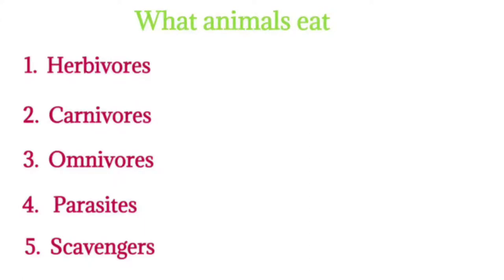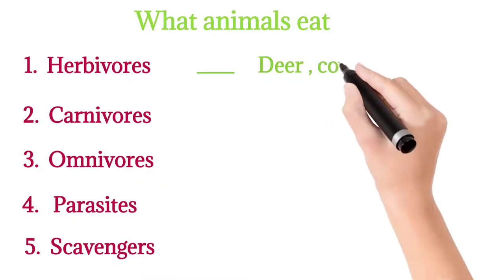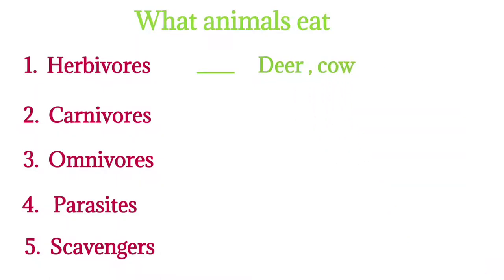First, herbivores. Animals that eat plants and plant parts such as leaves, grass, roots, fruits, and tree bark are called plant-eating animals or herbivores. Examples: deer, cow, etc.